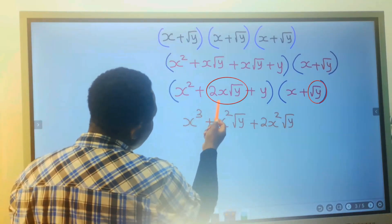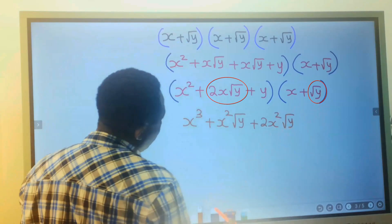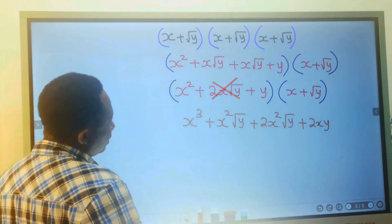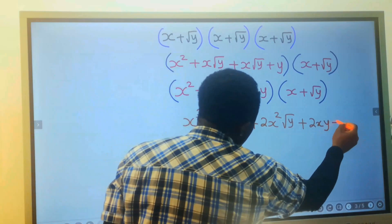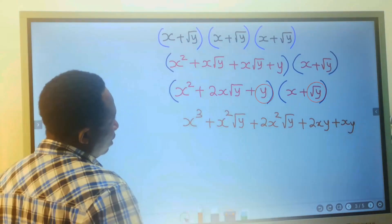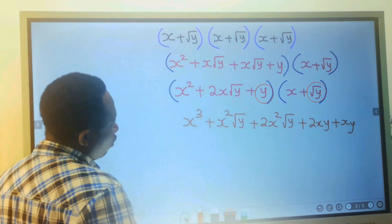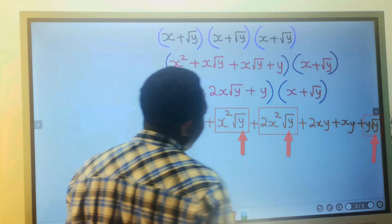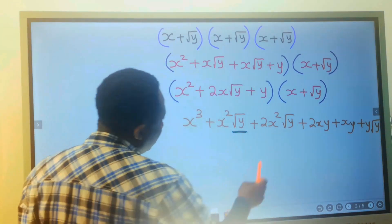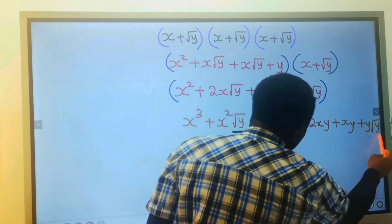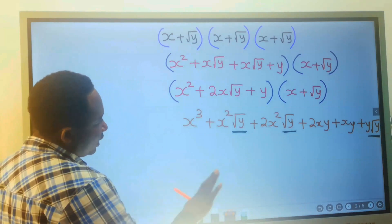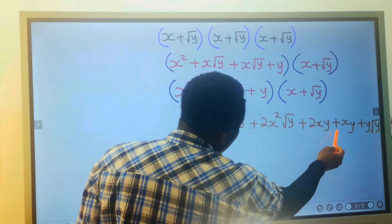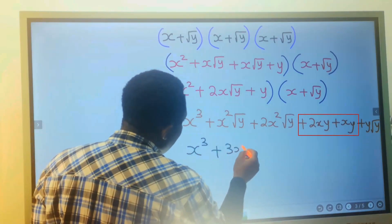2x times the square root of y multiplied by the square root of y gives 2xy. y multiplied by x gives xy. y multiplied by the square root of y gives y times the square root of y. We bring together the terms with the square root of y: x cubed, then 2xy plus xy gives 3xy, and x squared times the square root of y plus 2x squared times the square root of y gives 3x squared times the square root of y.